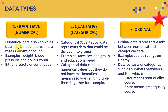Numerical data, also known as quantitative data, represents a measurement or count. For example, you might want to measure someone's weight, blood pressure, or how many dollars are in someone's bank account. Within quantitative or numerical data, you might find two categories: either discrete or continuous.